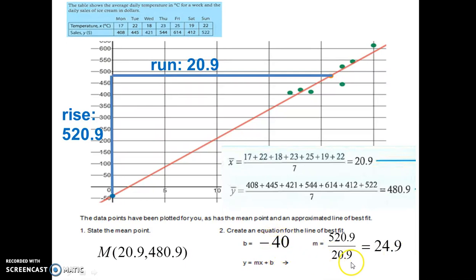So now that we have the slope intercept and the slope, we can write the equation of the line. y equals mx plus b. y equals 24.9x minus 40. That is our estimated line of best fit. Now we are going to see how to do this on our calculator and get the actual best fit line and we are going to compare it to our estimated one and see how close we were.